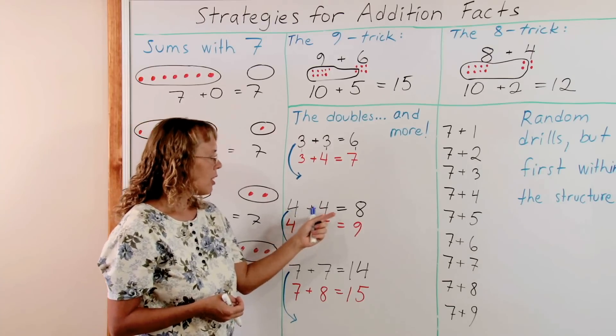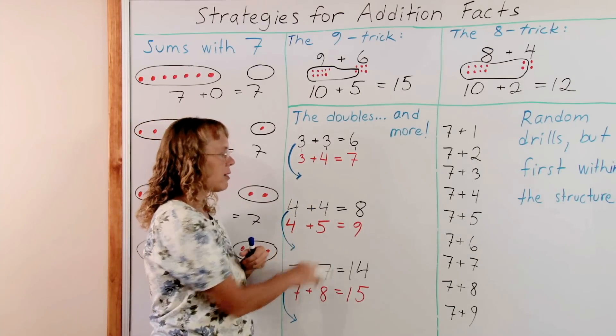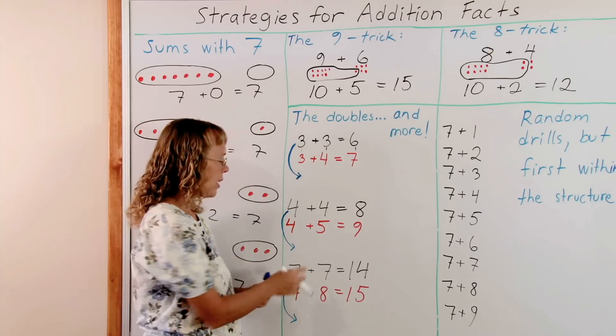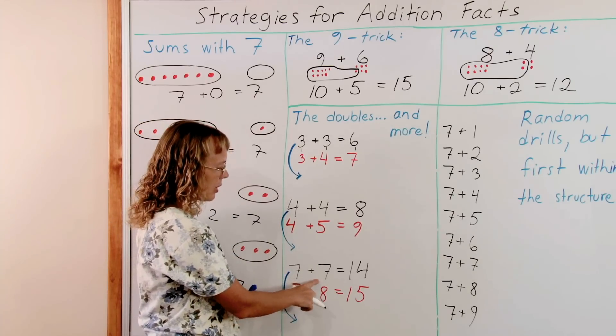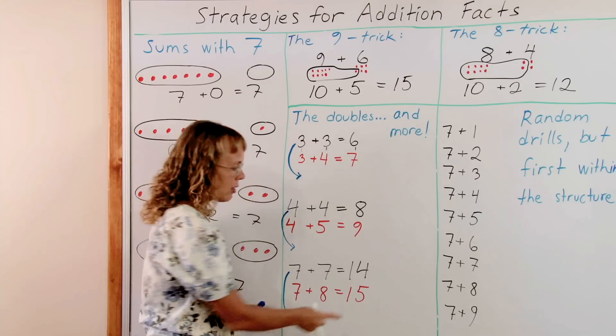Here's another example. 4 plus 4. But then we make another addition fact. It's just one more. 4 plus 5, or it could be 5 plus 4. Of course, 9. And here, 7 plus 7 equals 14. But 7 plus 8 is just one more than that. So it's 15.